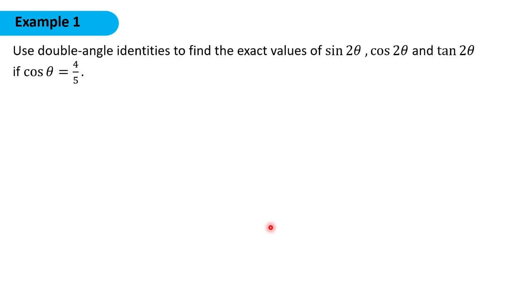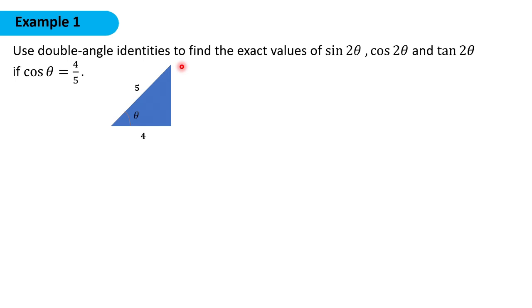For example 1, let's say we are asked to get the values of sine 2θ, cosine 2θ, and tangent 2θ, given that cosine θ is equal to 4 over 5. So let's say this is our right triangle, this is our angle θ, this is the adjacent side, and this would be the hypotenuse. So cosine θ is equal to adjacent over hypotenuse, so we need to get the value of the opposite side.